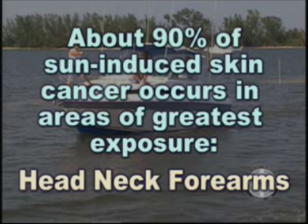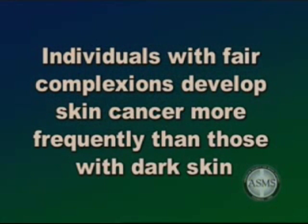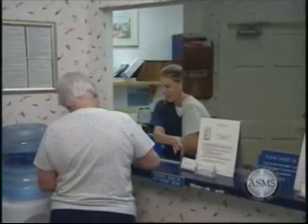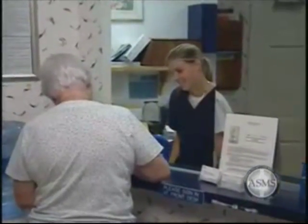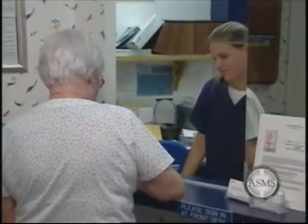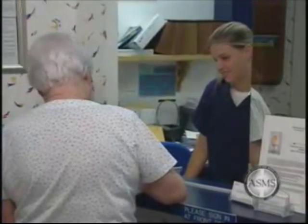Sun damage accumulates over many years, and about 90% of sun-induced skin cancer occurs in areas of greatest exposure — namely the head, neck, and forearms. People with a family history of skin cancer are at increased risk, and individuals with fair complexions develop skin cancer more frequently than those with dark skin. If you have already had a skin cancer, you are likely to develop another in the years ahead. To minimize problems, you should be evaluated frequently for new suspicious lesions on your skin.